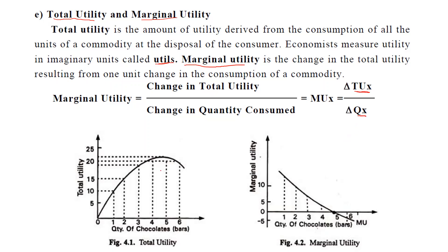For the graphical representation of total utility: when you consume one unit of chocolate, the utility derived will be 10 units. From the second unit, total utility will be 15 — that is, plus 5 gets added. Likewise for the third unit. So when you join these points, you will get the total utility curve. The same applies to marginal utility.